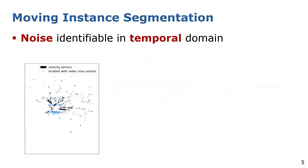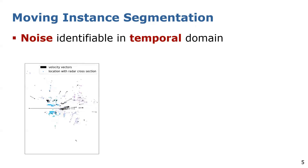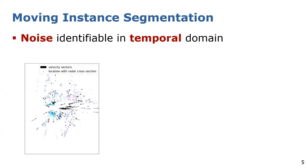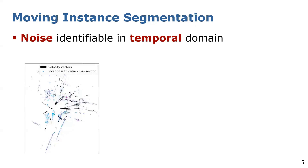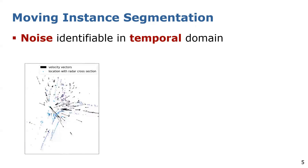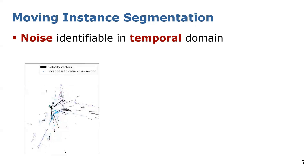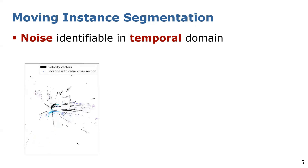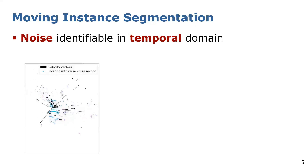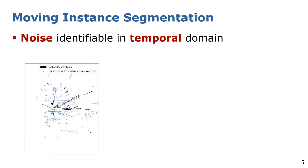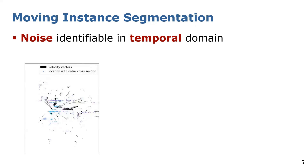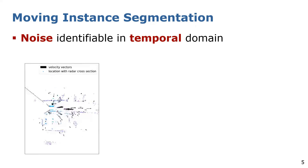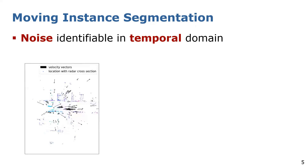However, noise is often directly identifiable in the temporal domain. As you can see here, within the consecutive scans, noise appears and disappears as seen by the jumping velocity vectors. Therefore, temporal information is important to identify noise. However, the processing of aggregated scans through the whole network leads to latencies as mentioned before, and therefore an optimized module is required.